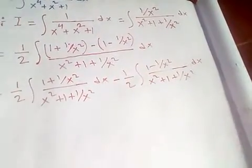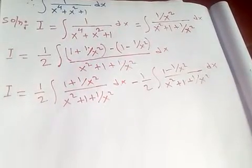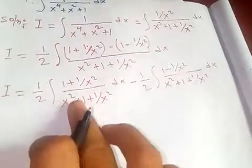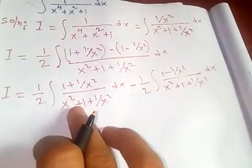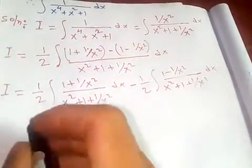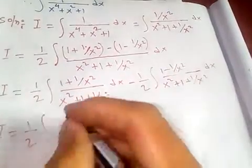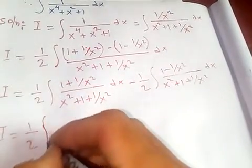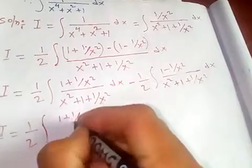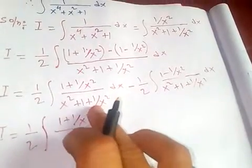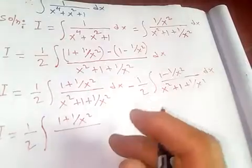Now let's use our special technique of integration — the substitution method. We are going to use it here. Let's simplify this further: half times (1 plus 1 over x squared).